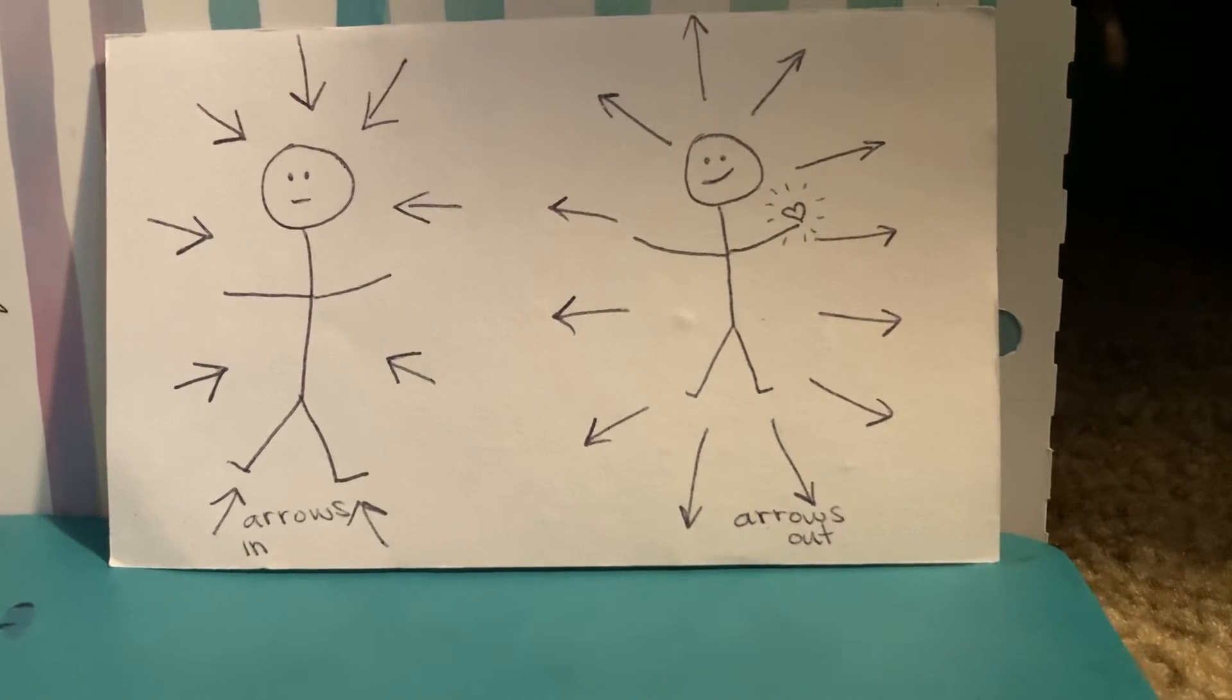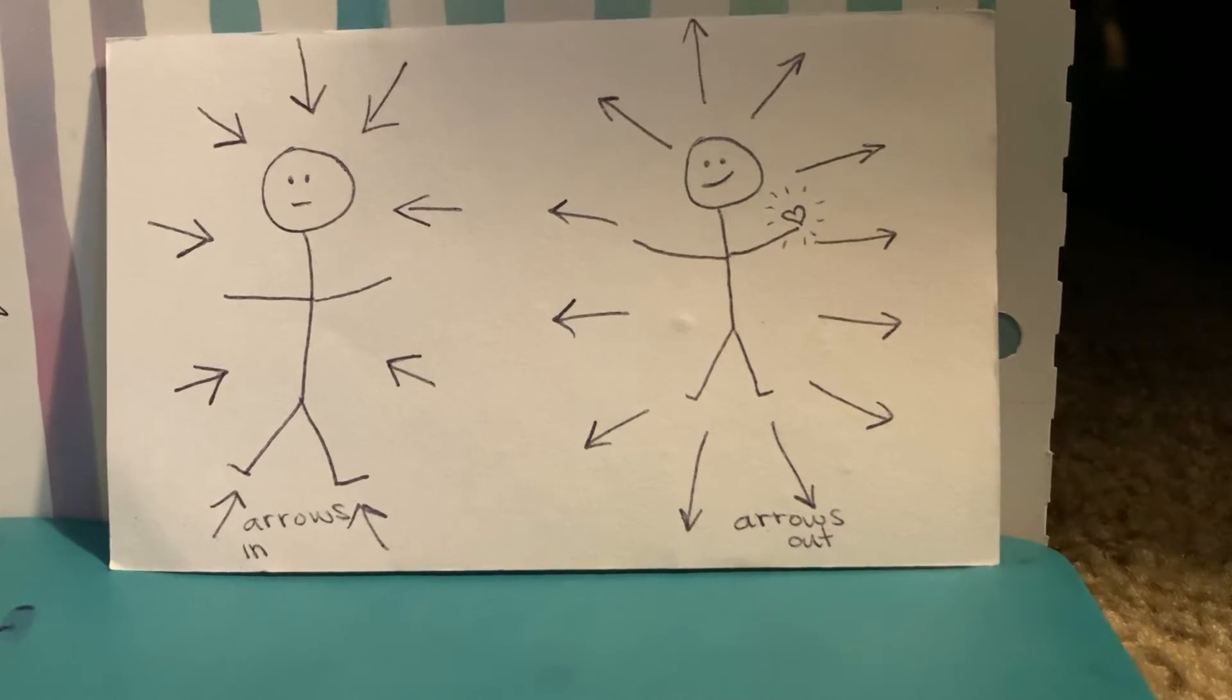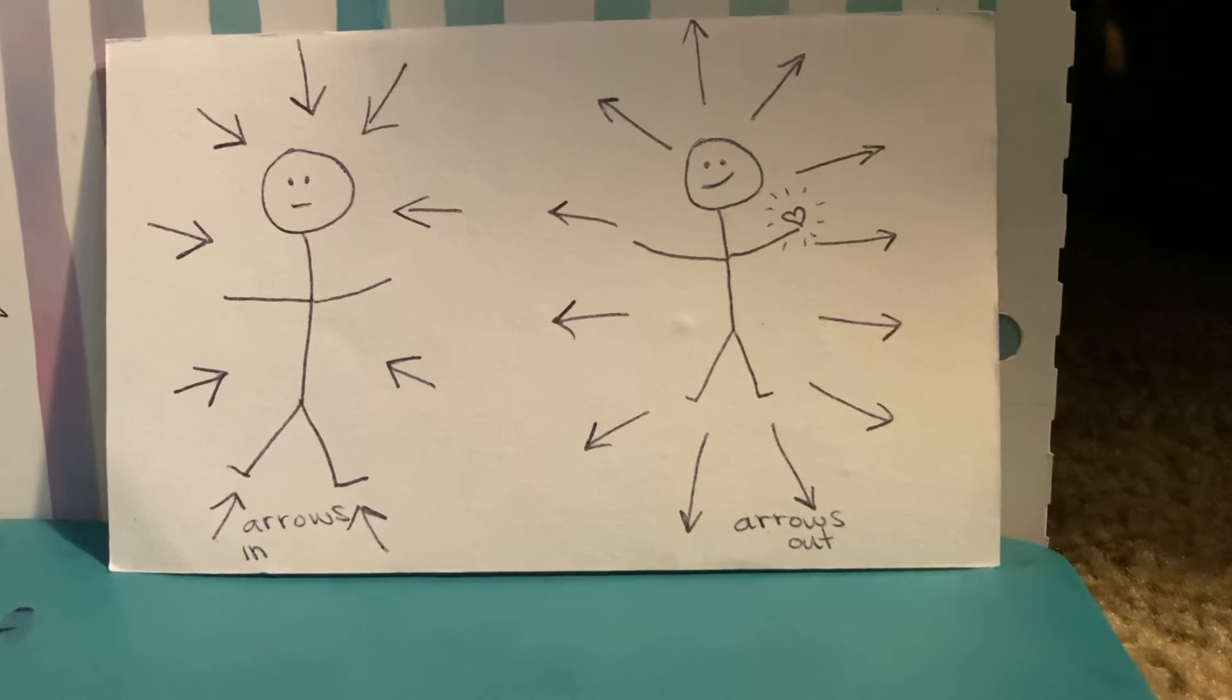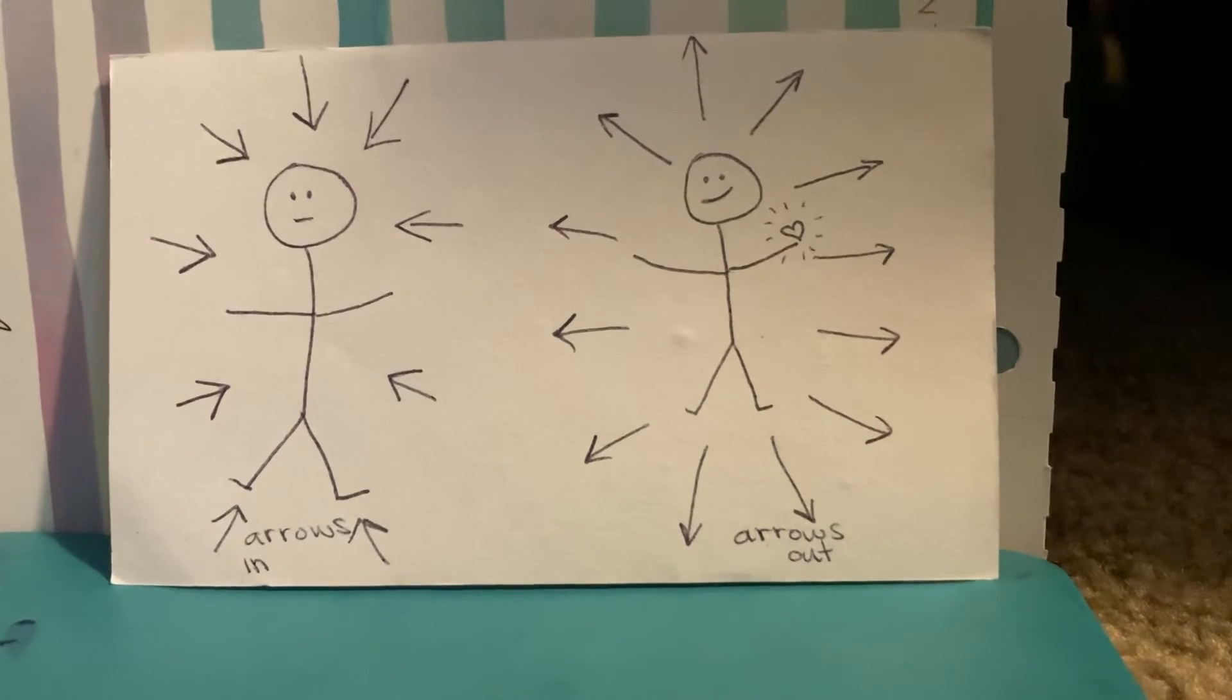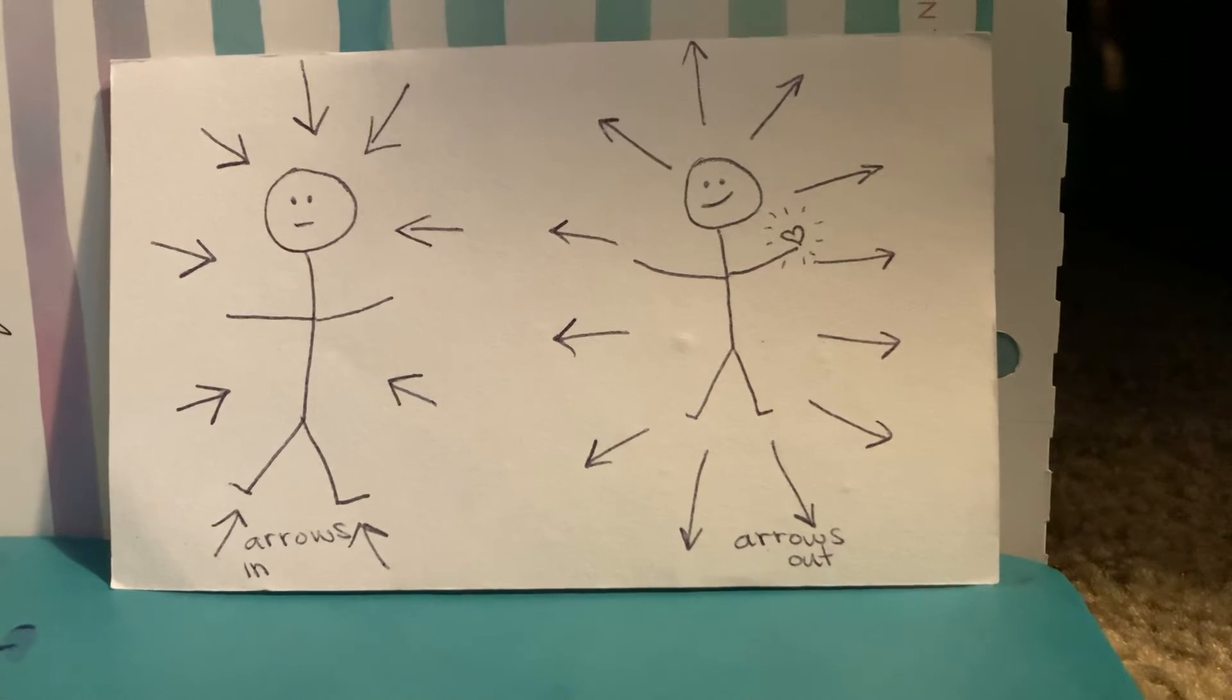When all the arrows point in, he is content. The arrows in man is a small man who cannibalizes himself and eventually shrinks. When you focus on yourself, you don't grow. You shrink.